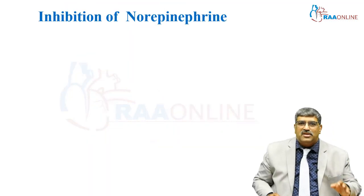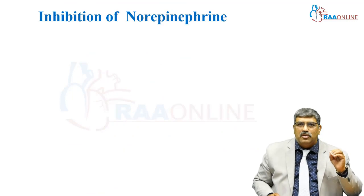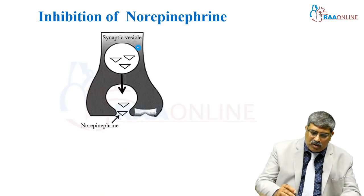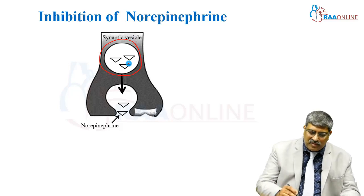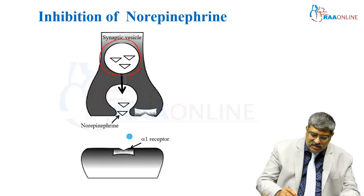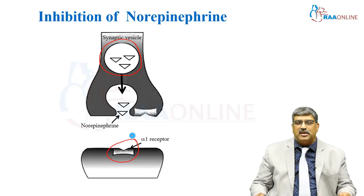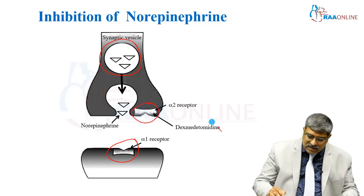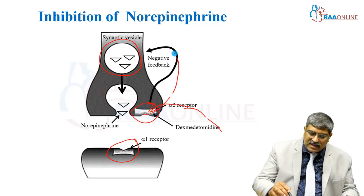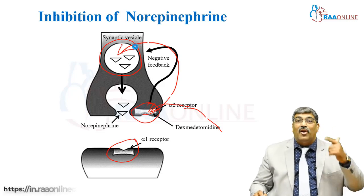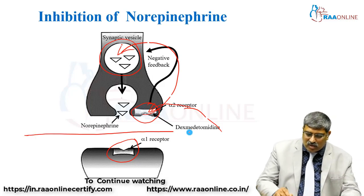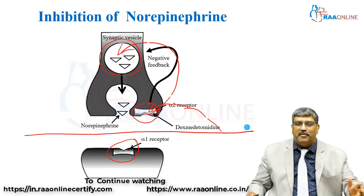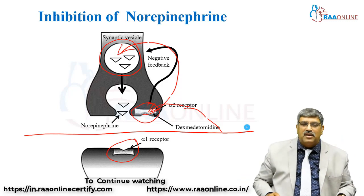The foremost action of dexmedetomidine is to prevent the release of norepinephrine. Normally at the neuromuscular junction, synaptic vesicles release norepinephrine, which combines with alpha-1 receptors to cause vasoconstriction. Dexmedetomidine binds to the alpha-2 receptor and sends a negative feedback signal to the synaptic vesicles not to release norepinephrine, thereby preventing vasoconstriction.